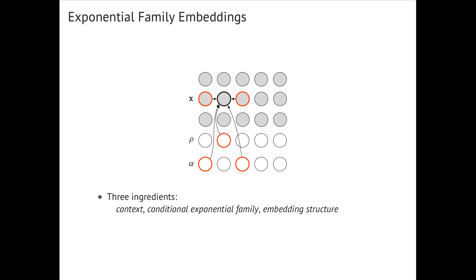We infer the embeddings with a scalable algorithm based on stochastic gradient descent. On all three applications, we found Exponential Family Embedding Models to be more effective than other types of dimensionality reduction. They better reconstruct held-out data and find interesting qualitative structure.